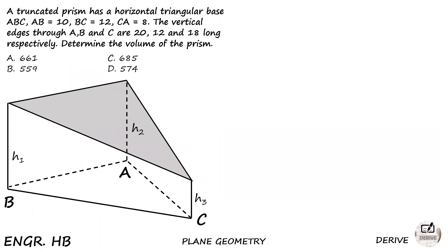This is a board exam problem and a multiple choice problem. A truncated prism has a horizontal triangular base ABC where AB equals 10, BC equals 12 units, and CA equals 8 units. The vertical edges through A, B, and C are 20, 12, and 18 units long respectively. Determine the volume of the prism.